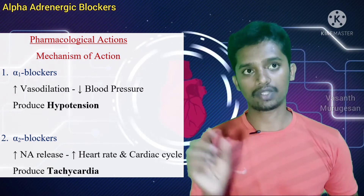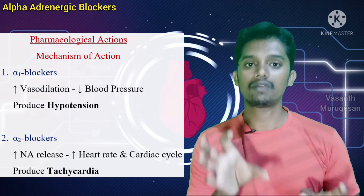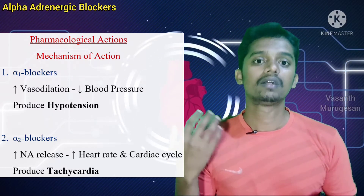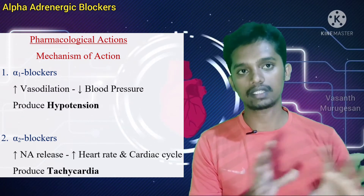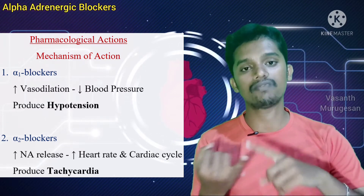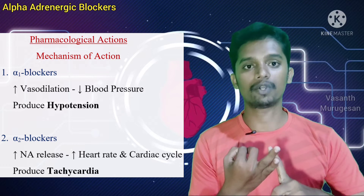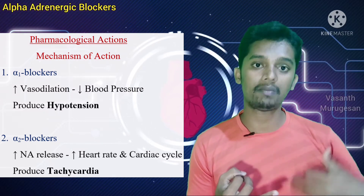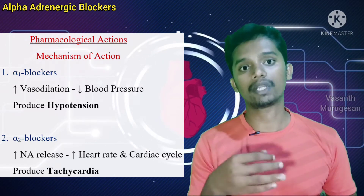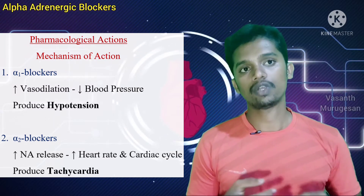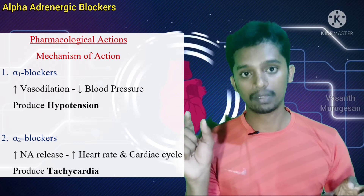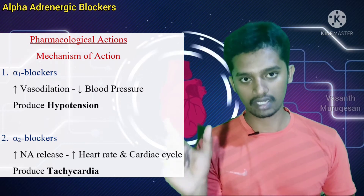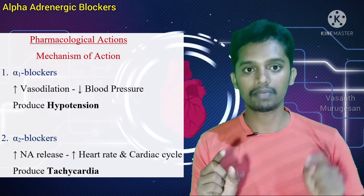Now comparing classifications. Non-selective blockers block both Alpha 1 and Alpha 2, so they produce two effects: hypotension due to Alpha 1 blockade, and tachycardia due to Alpha 2 blockade — BP is lowered while heart rate increases simultaneously. For selective Alpha 1 blockers: you get hypotension but tachycardia is avoided, which makes them more clinically useful.